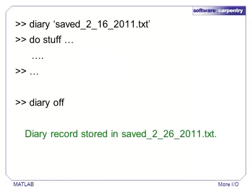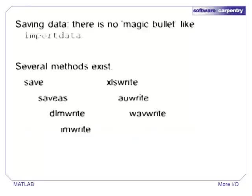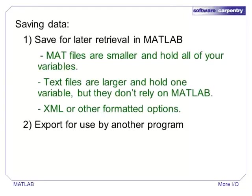Using diary, we can find changes to output that might be caused by changes to functions or data files. To turn on the diary, type diary and a file name. If you don't specify a file name, the output is stored in a file called diary. You can turn the diary on and off by typing diary on and diary off. Unfortunately, there is no single function that can store any kind of data. If you are saving data that will be reloaded by MATLAB, it is probably best to use MAT files that can store your entire workspace.